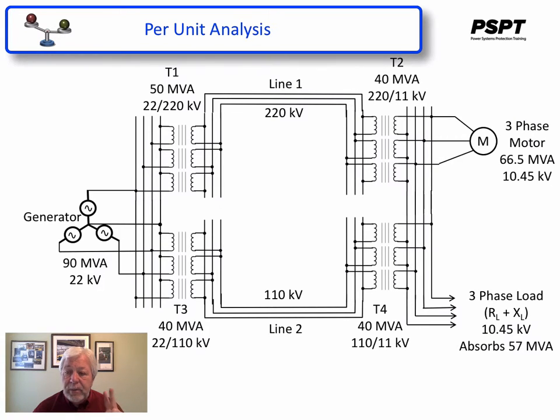The two-step operation that we have just described, using per phase analysis and per unit analysis, allows us to reduce a very complex system, such as the example here in this slide, which is a generator feeding a couple of loads through four transformers and a couple of lines. It's three phase, and there's various voltage levels, which would be very difficult to, but not impossible, to analyze.